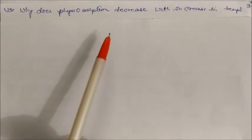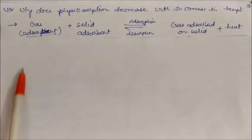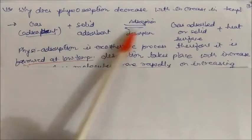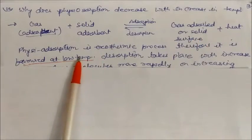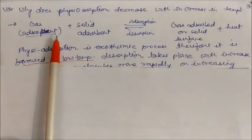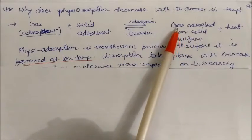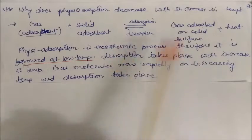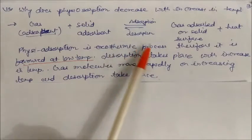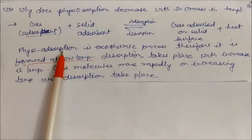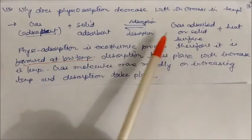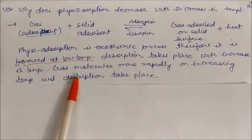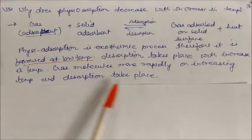Why does physisorption decrease with increasing temperature? This is gas adsorbent and this is solid adsorbent. When they both combine, adsorption will take place - gas is adsorbed on solid and some heat is released. Reversible of this is called desorption. When heat is supplied on this gas adsorbed on solid, both will be separated. Physisorption is an exothermic process, therefore it is favored at low temperature. Desorption takes place with increasing temperature, and if you decrease temperature, this will go in forward direction. Gas molecules move more rapidly on increasing temperature and desorption takes place.